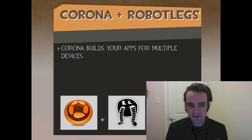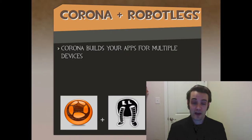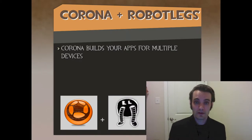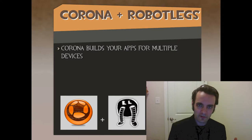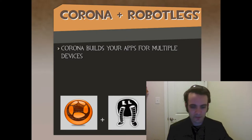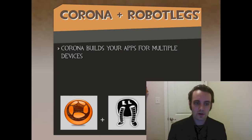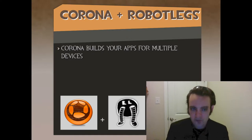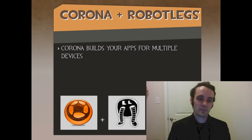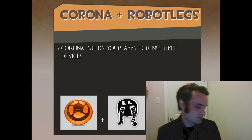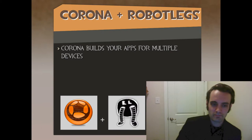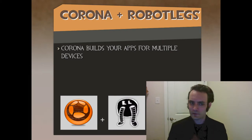Let's summarize: Corona builds your apps for multiple devices — that's what Corona solves. So you don't have to build native apps, web apps, or PhoneGap apps. You build it once in Corona and it works for all devices, getting as close to native speed as possible.